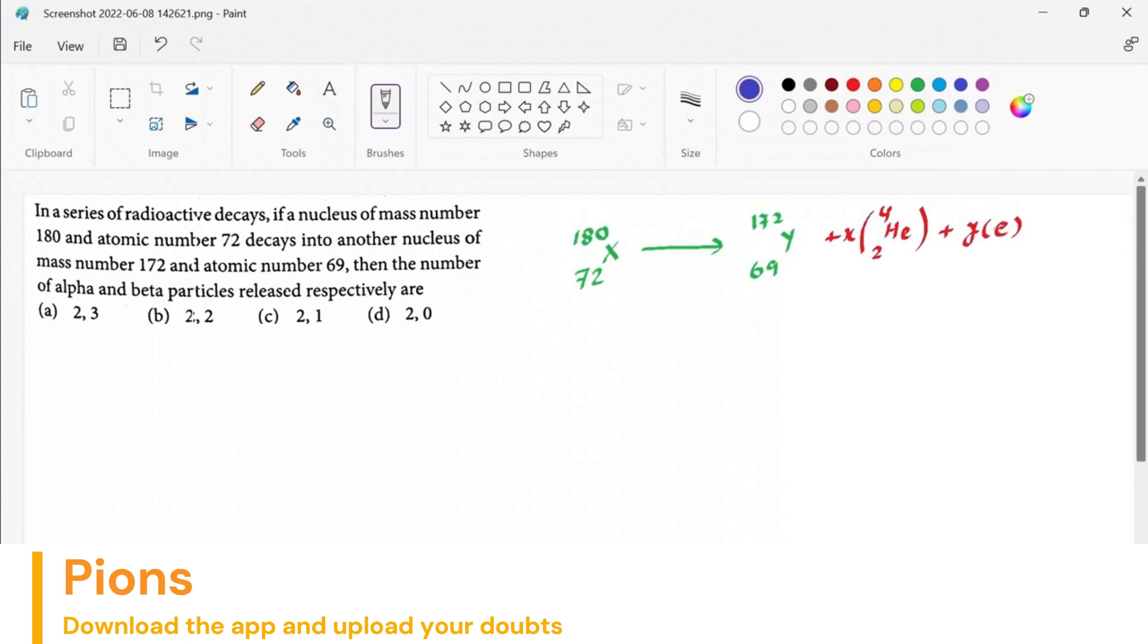Mass number here is 180, and that equals 172 plus 4 times x plus, what is the mass here? Electron, we need take it negligible, right? So it will be zero.